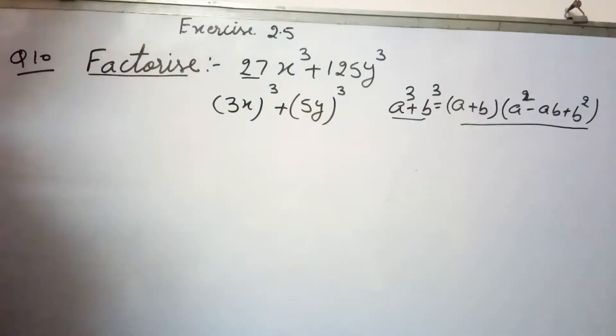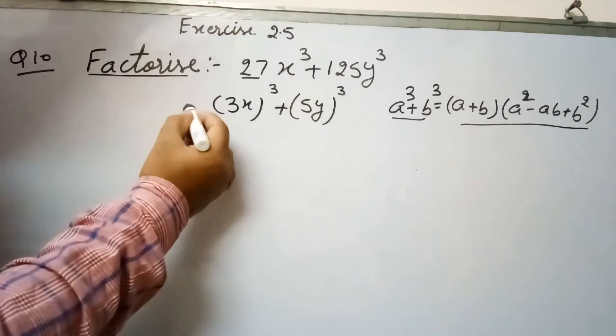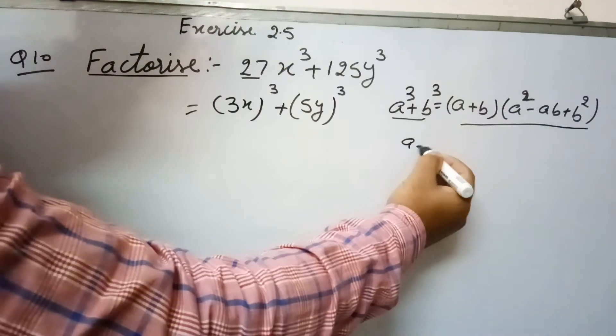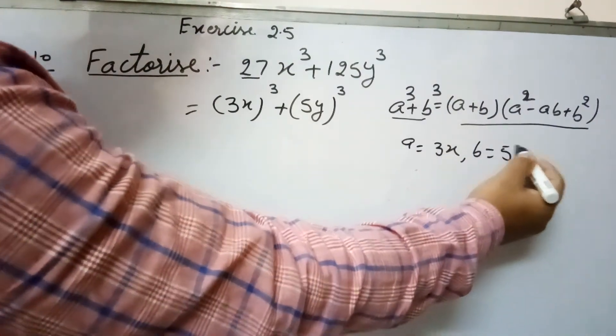These are the factors of a³ + b³. So here if we compare this, a will be 3x and b will be 5y.